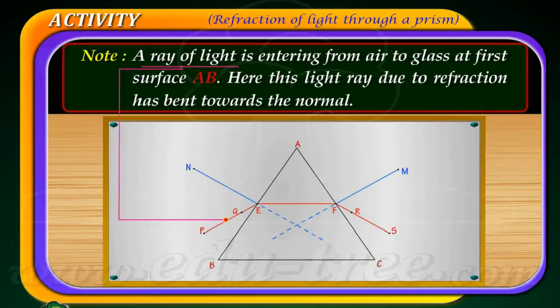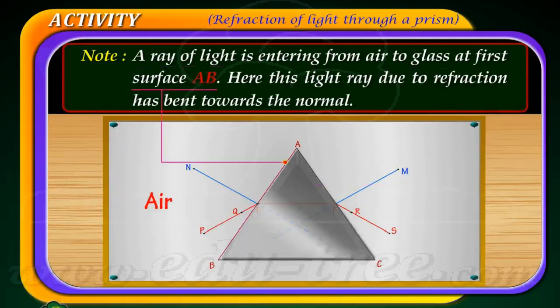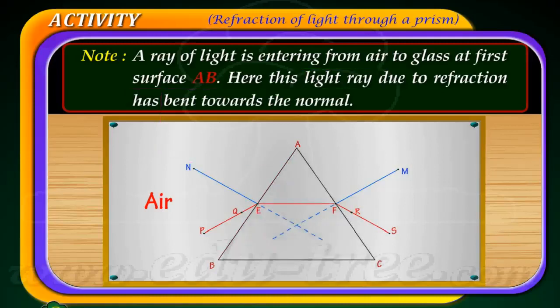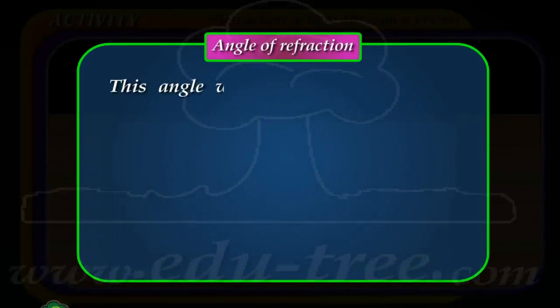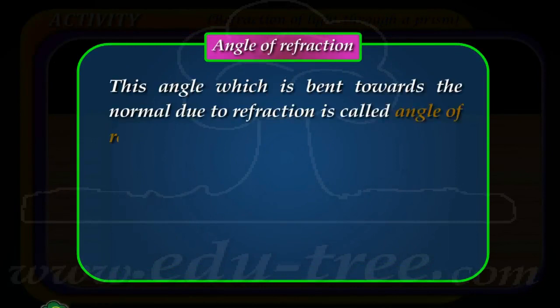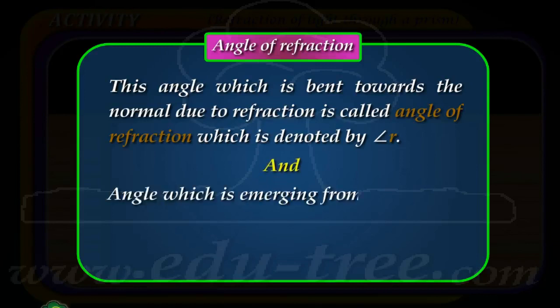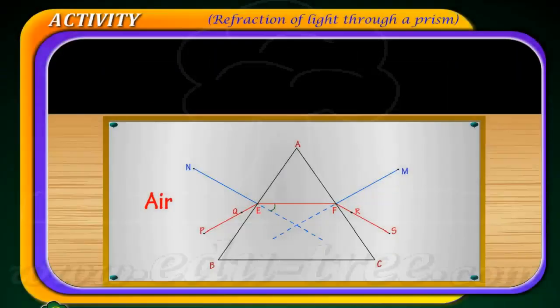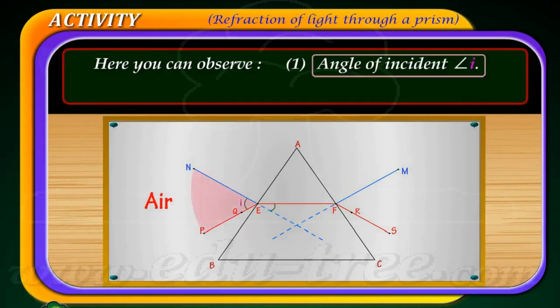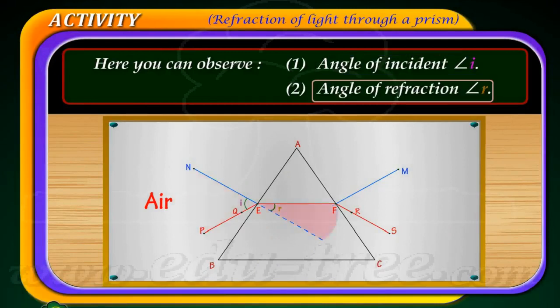Note: A ray of light is entering from air to glass at the first surface A B. This light ray due to refraction has bent towards the normal. The angle of refraction is denoted by angle R and the angle of incidence is denoted by angle I.